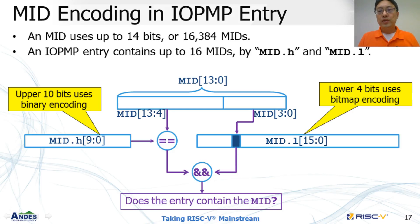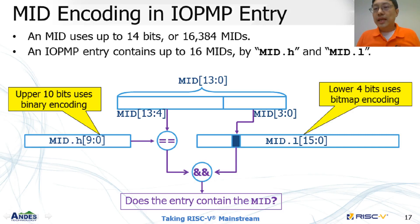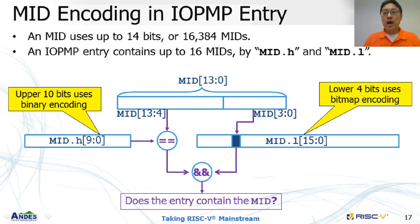When IOPMP is doing an MID comparison, the 14-bit MID carried by a transaction is split into the upper 10 bits and the lower 4 bits. For every rule, the upper 10 bits are compared to MID.Edge directly, and the lower 4 bits are encoded in a bitmap style in MID.L. By this encoding scheme, an IOPMP rule can store up to 16 continuous MIDs.